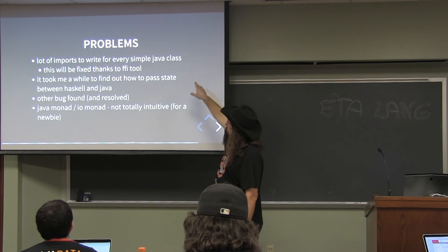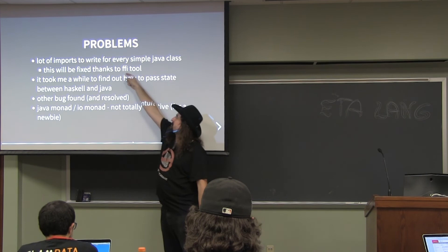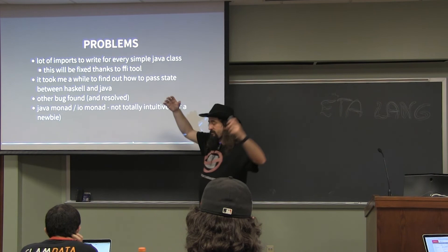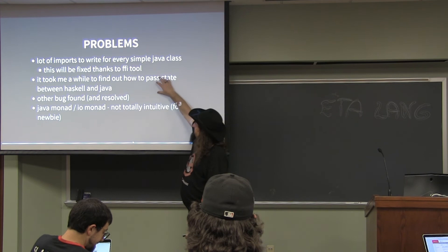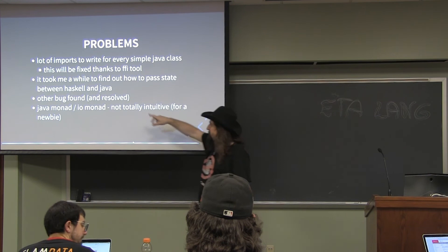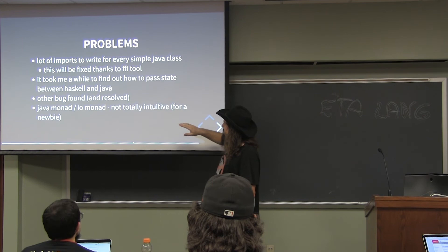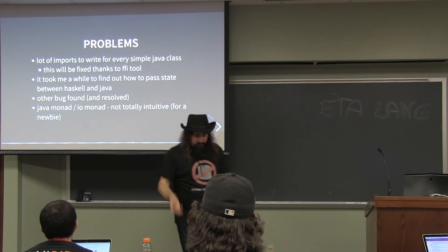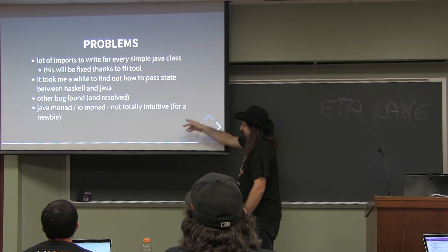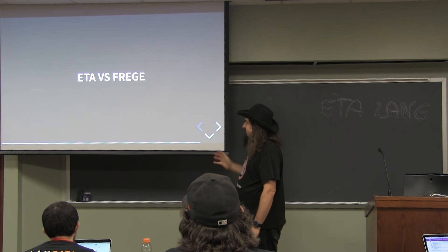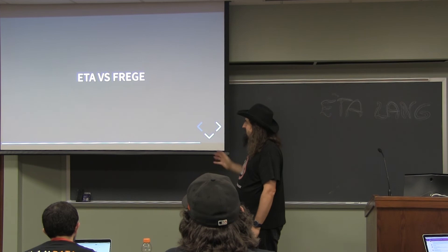Summarizing the interoperability: there are lots of imports needed for every single Java class, but this will be fixed with the FFI tool that's not yet finished. It was complicated to pass objects defined in Haskell back and forth. This was not really explained in ETA documentation — I had to find it out with the help of the ETA developers. Other bugs were found but are fixed now. Java Monad and IO Monad — because Java mostly does side effects — you do all operations with Java inside Java Monad. But you can also use IO Monad, and mostly it's easier and more intuitive.